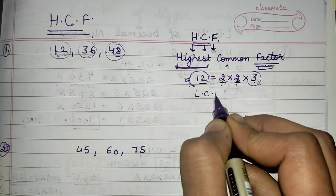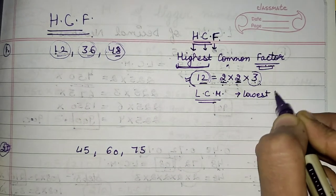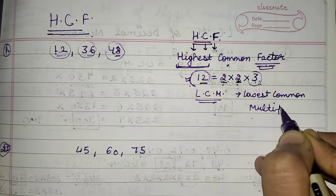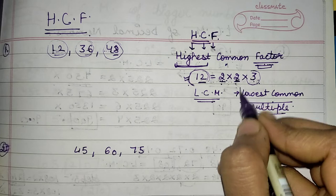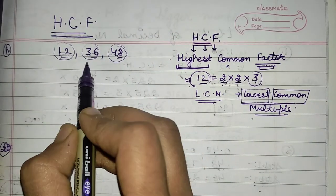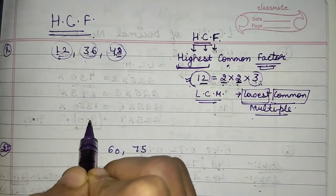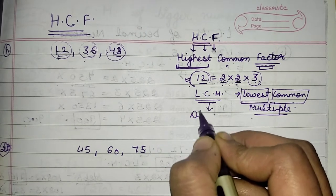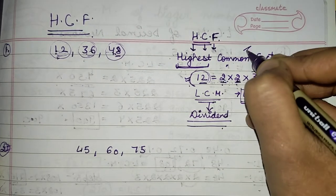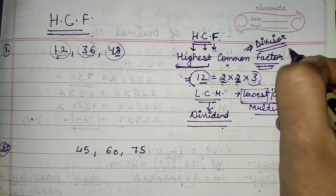HCF is the reverse of LCM. LCM is the lowest common multiple — the lowest number common among all the numbers such that it is divided by all of them. In simple terms, LCM is our dividend and HCF is going to be our divisor for all the numbers.